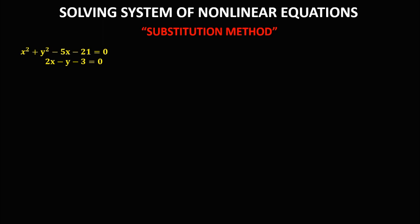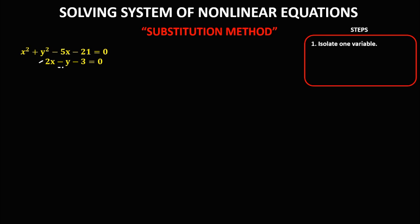Using the substitution method, we need to isolate one variable. From this equation, because we can easily isolate y, we just need to transpose the negative y to the right side. So this becomes 2x minus 3 equals positive y.